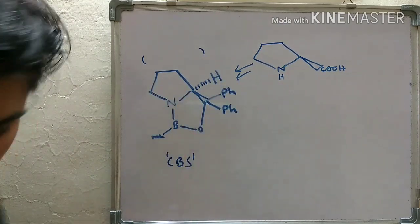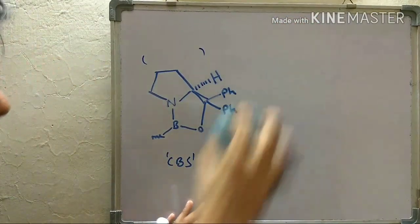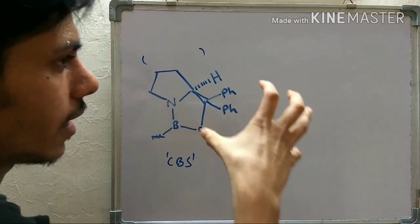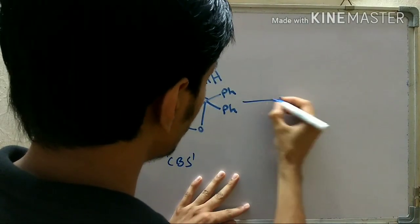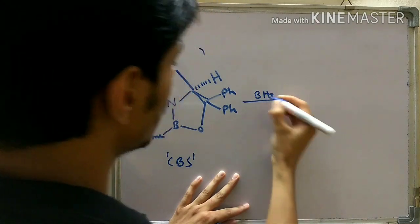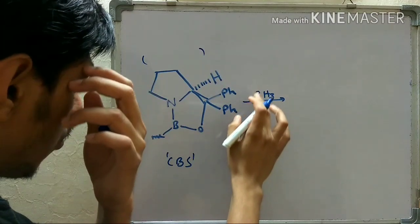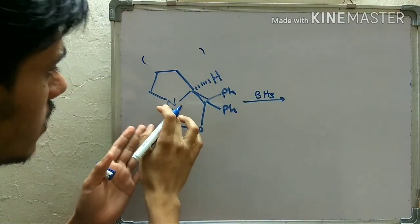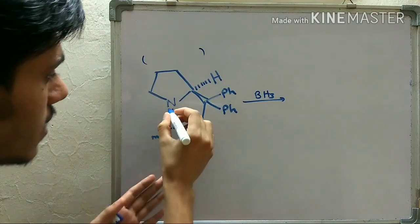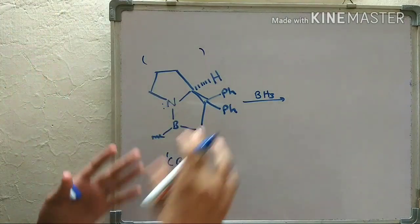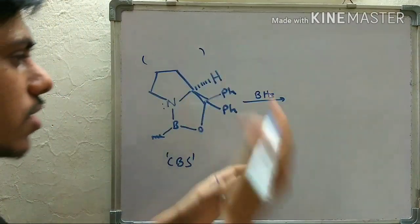In the first step, you have to add BH3 (borane). What happens is that this boron coordinates with the nitrogen of the CBS catalyst. Although this nitrogen is already coordinated with its boron, it still has a free lone pair, so it can coordinate with BH3.